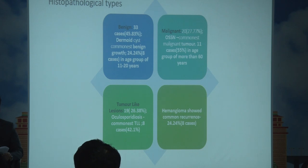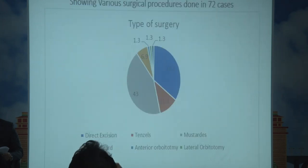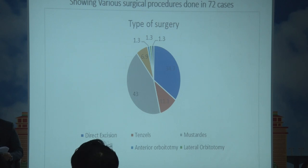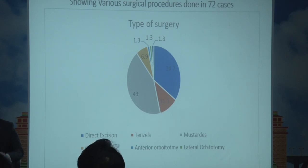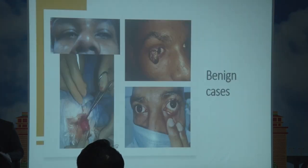Hemangioma showed a common recurrence. This graph shows the various types of surgery performed, which included direct excision, Tenzel flap, Mustardé flap, Cutler-Beard procedure, anterior orbitotomy, lateral orbitotomy, and exenteration.